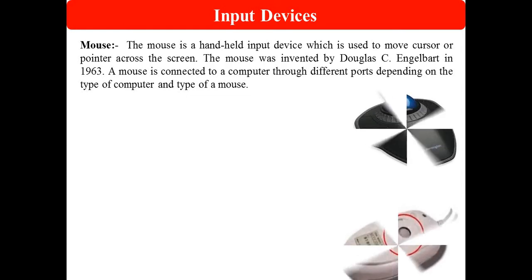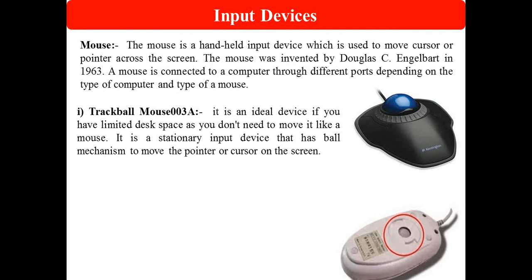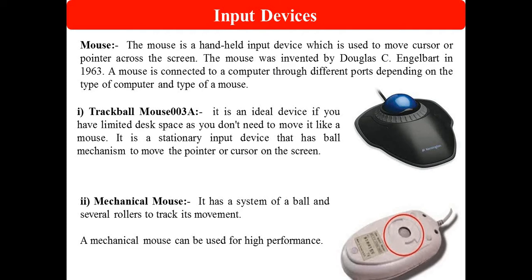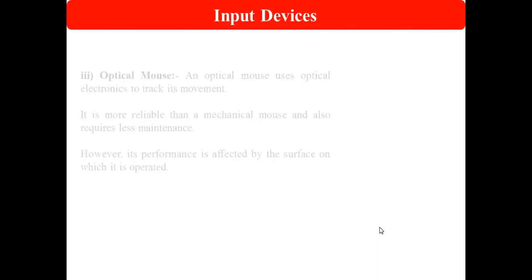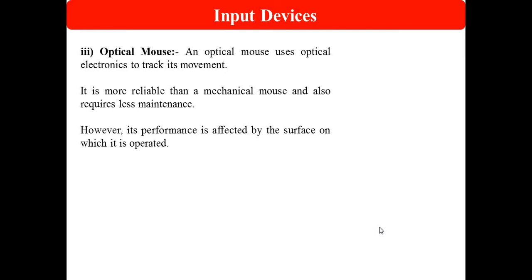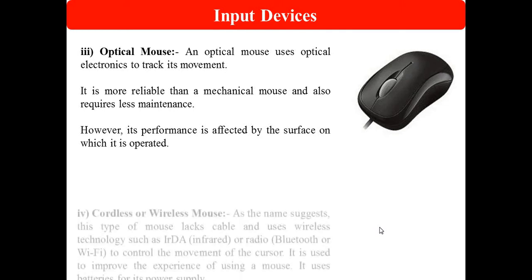These days, wireless mice are also available. The trackball mouse was the original mouse used 20 to 30 years ago. The second type is the mechanical mouse, which has a system with a ball — as the ball moves, the cursor also moves. The third type is the optical mouse, which uses optical electronics to track its movement. Optical signals are used to move the cursor. It is more reliable than a mechanical mouse and requires less maintenance, though its performance is affected by the surface on which it is operated.